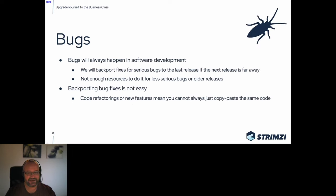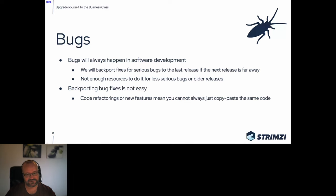Another problem is bugs. Bugs will always happen in software development — you'll never have a 100% bug-free release. If something serious occurs we try to backport fixes into the last release, but we will definitely not backport it into releases that are old by several months or years, both because we don't have enough resources and because the codebase has changed enough that fixes need to be reimplemented from scratch.